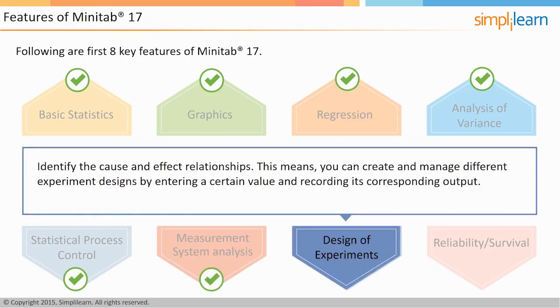Next, you'll learn about the feature of design of experiments, or DOE. Anything that deals with experiments is bound to be interesting. With this feature, you can identify the cause and effect relationship. In other words, you can create and manage different experiment designs by entering a certain value and recording its corresponding output. This process of designing different experiments enables you to arrive at the exact method to optimize your process output.